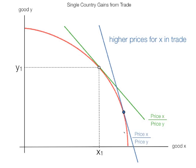Now the new ratio of P — the price of X to the price of Y — is the blue line. So here the country produces X2, which is more than before because they're focusing on that, and they produce Y2, which is a lower quantity than the previous quantity of Y because they're specializing. Less of Y and more of X.